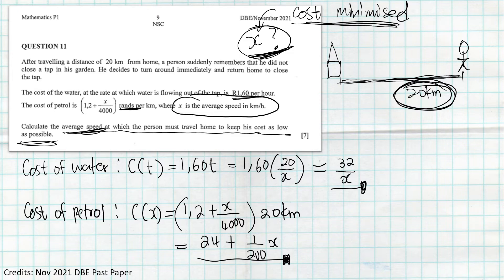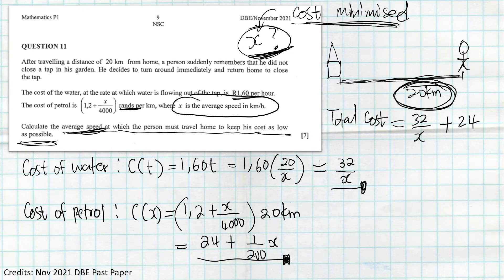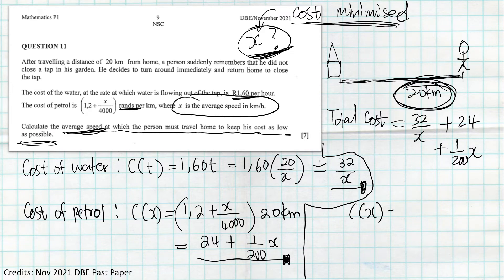Now we determine the total cost equation, since we want to minimize the combined cost of water and petrol. The total cost C(x) equals the cost of water plus the cost of petrol: C(x) = 32/x + 24 + x/200. This is our total cost equation in terms of x, the average speed.